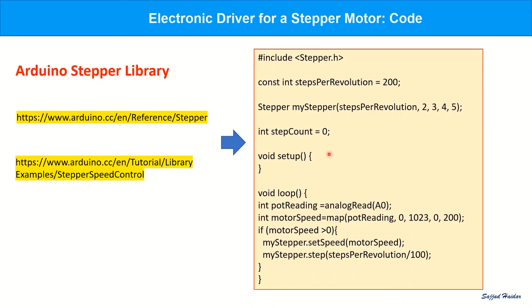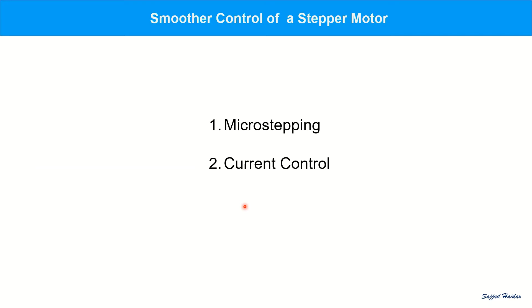Arduino code is shown here. You can find the same code in Arduino website. For further, smoother control of a stepper motor, people use microstepping and current control. In future, I hope to show microstepping and current control as well.